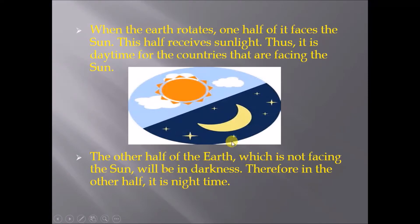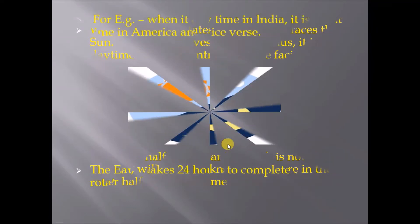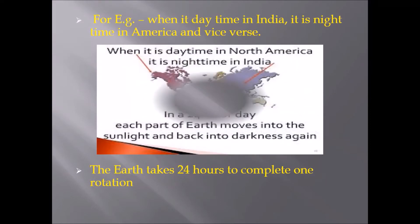For example, when it is daytime in India, it is nighttime in America, and vice versa. The Earth takes 24 hours to complete one rotation.